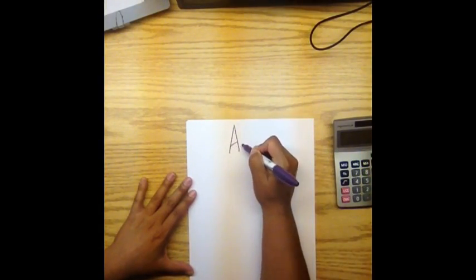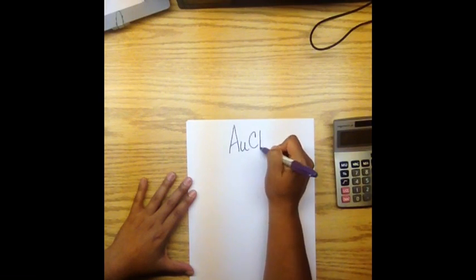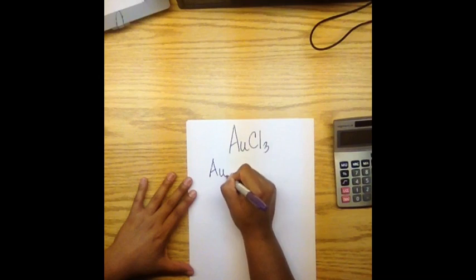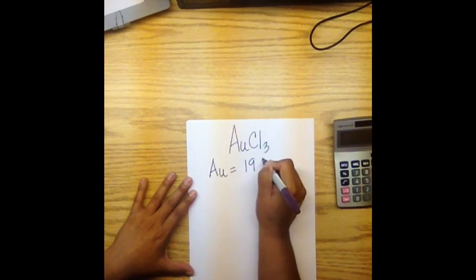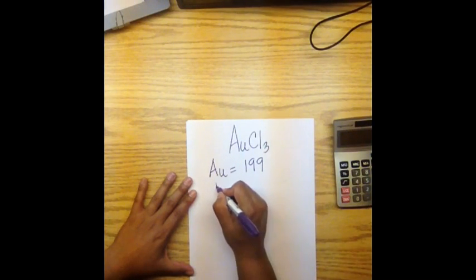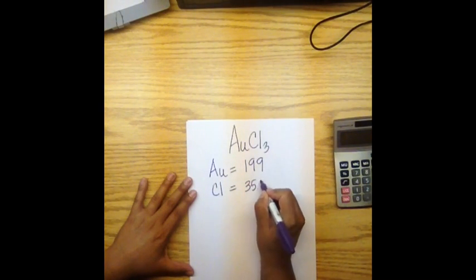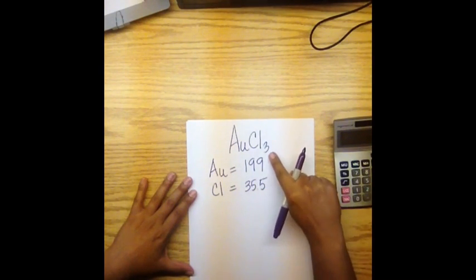The formula for gold chloride is given in the problem as AuCl3. The mass for gold comes from Mendeleev's values of 199 and the mass for chlorine is 35.5. There's no units associated with these values. Since we're doing ratios, it's assumed that the units are equal.